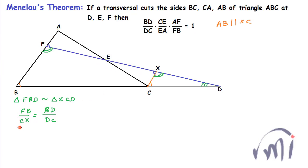they are also similar triangles. Triangle EAF is similar to triangle ECX. And here the ratio of CX to AF will be equal to the ratio of CE to EA.